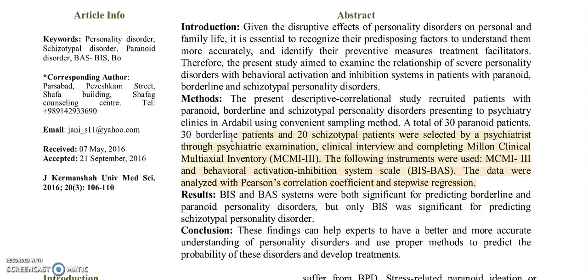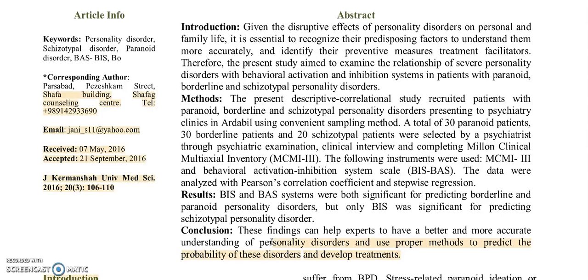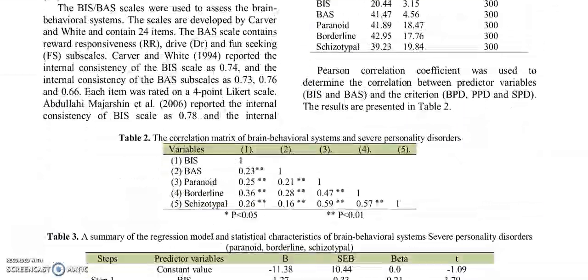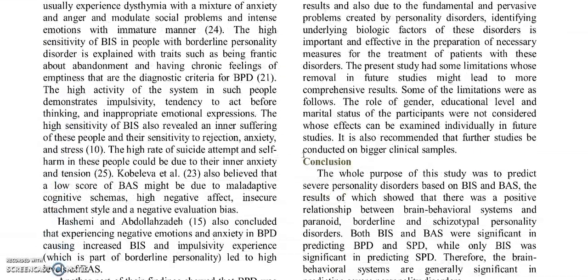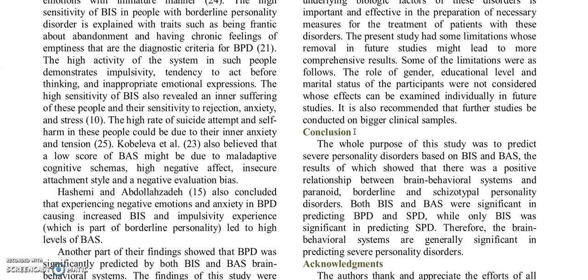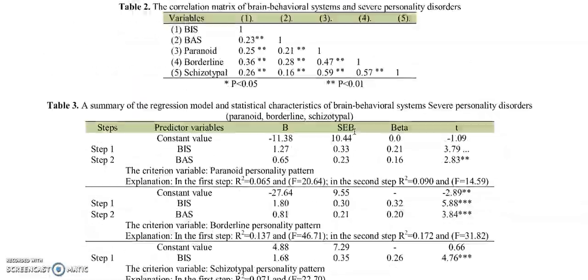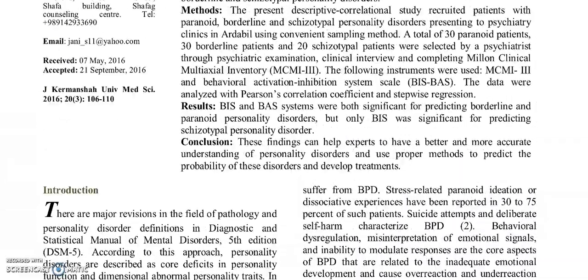Then they explain the results, which here are very general — an overview with very few details. The real details are in the body of the paper. Then we have the conclusion, which is also very general and shortened. If you scroll down to the very end of the paper, there is a slightly longer conclusion that gives a bit more detail. So that is our abstract.